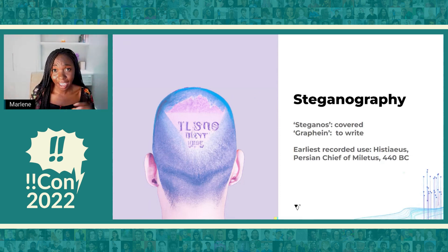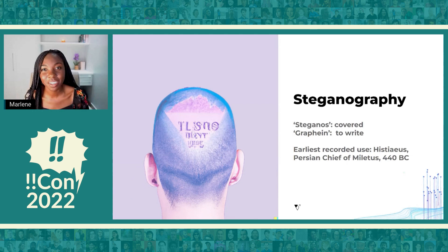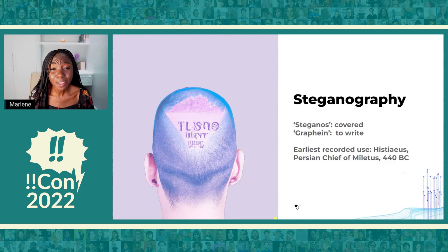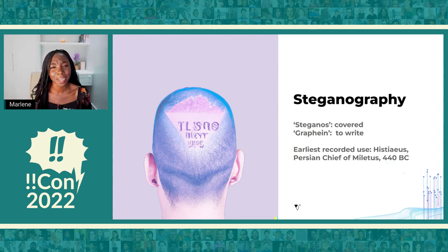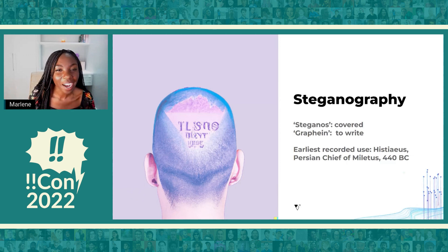The message was covered once the servant's hair grew back, and Hystaeus was then able to send the servant to someone called Aristagoras, who shaved the servant's head and read the secret message. Obviously, this is not the most ethical or efficient way of sending a secret message, so I would actively discourage anyone from using this specific flavor of steganography.